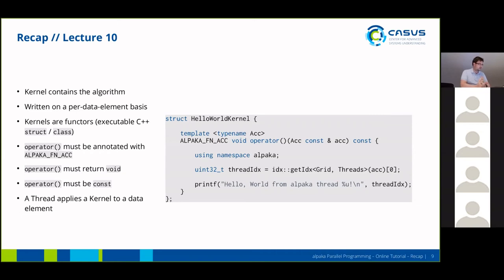The kernel you have written contains the algorithm. The algorithm is typically written on a per-data-element basis, and in Alpaca, kernels have to be functors — meaning executable C++ structs or classes. You have to implement the call operator, and this operator must be annotated with the Alpaca function accelerator specifier. The operator must return void — there are no return types from a kernel — and it also must be const, meaning the operator cannot modify any members of the kernel itself. The thread applies the kernel to a data element.